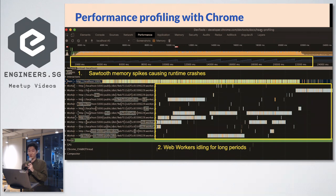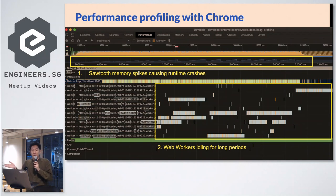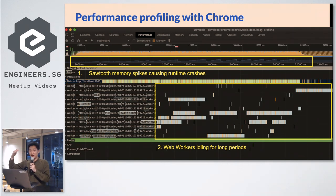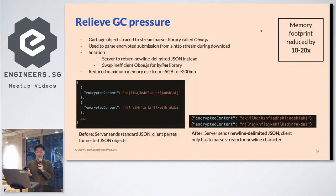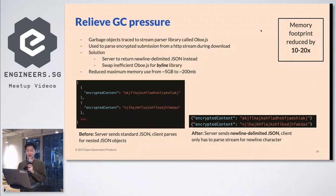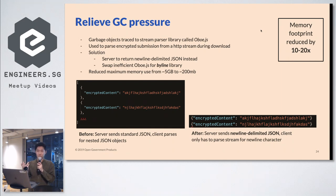To improve decryption performance, we ran a performance profile with Chrome and saw two main problems. First, there were memory spikes — every time we tried to decrypt, there would be heavy garbage collection, causing the GC to choke up the thread, and memory growth was not coming down fast enough. Second, the web workers appeared to be idling for very long periods. We looked at the memory heap allocation and found that objects were traced to a stream parser called oboe.js. What oboe.js does is parse objects from an HTTP stream before the download has completed.